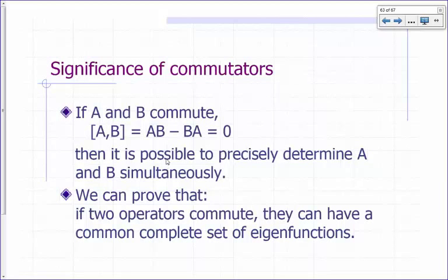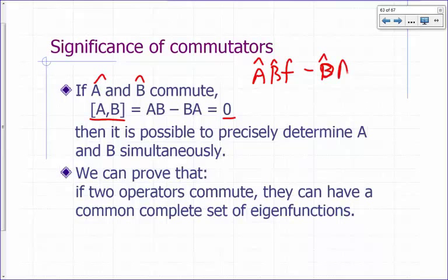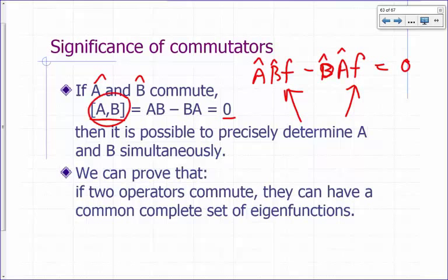So what's the significance of commutators? If operators a and b happen to commute, then the commutator of a and b is just a null operator — it multiplies the function by zero. If a·b·f and b·a·f are the same regardless of what the function is — and f must be arbitrary, not any specific function — then we say the commutator is a null operator and those two operators commute. If that is the case, you can prove it's possible to precisely determine a and b simultaneously.